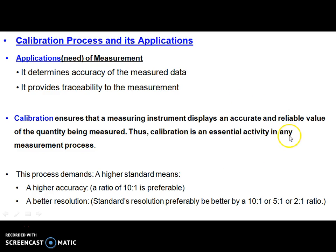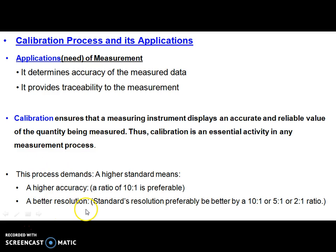There is one important relationship we should understand when going from the measurement process to the calibration process. The requirement of accuracy — the standard accuracy relative to the accuracy of the instrument under evaluation — is 10 to 1. So the standard used for calibration must be 10 times more accurate than the instrument under consideration, and it should have higher resolution as stated by this ratio.